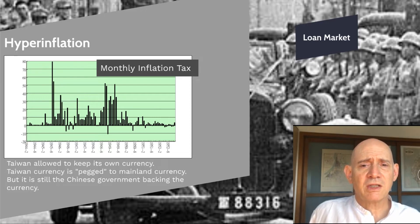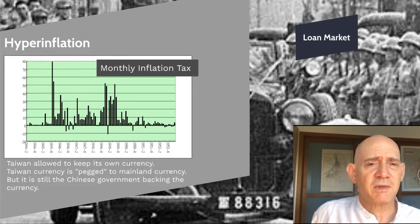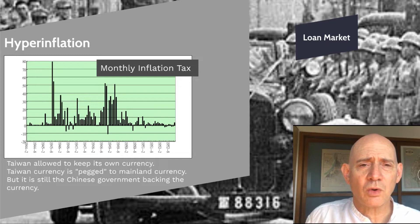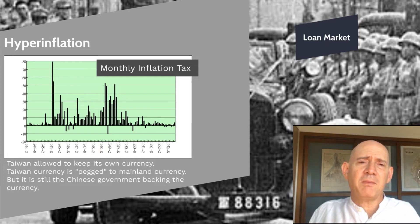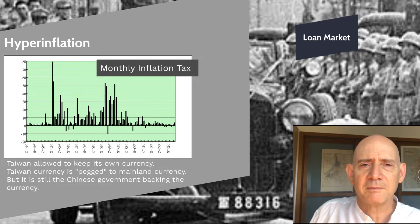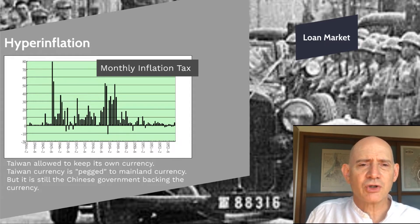Particularly around 1949, there's a big inflation as the nationalist Chinese government begins to collapse. There's also a big inflation right at the end of World War Two when everybody sees the Japanese losing, but you still have Japanese currency in Taiwan. Suddenly people know this currency is going to be worthless, everybody dumps it, and you see the biggest inflation spike right then. This inflation going on throughout this period basically destroys the Taiwan financial system.